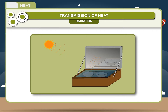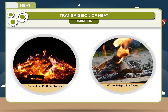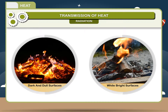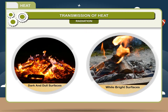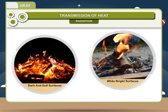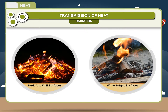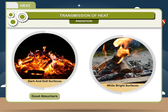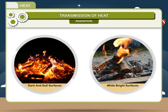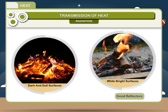Heat radiations are also reflected like light radiations. Dark and dull surfaces are good emitters of radiant heat energy while bright surfaces are poor emitters. Dark surfaces are good absorbers of heat energy while light or bright surfaces are good reflectors of heat energy.